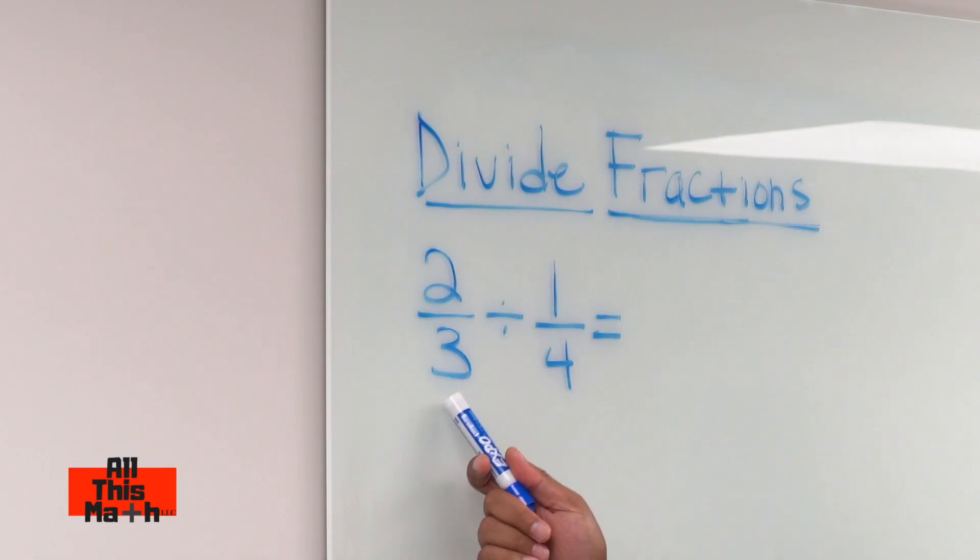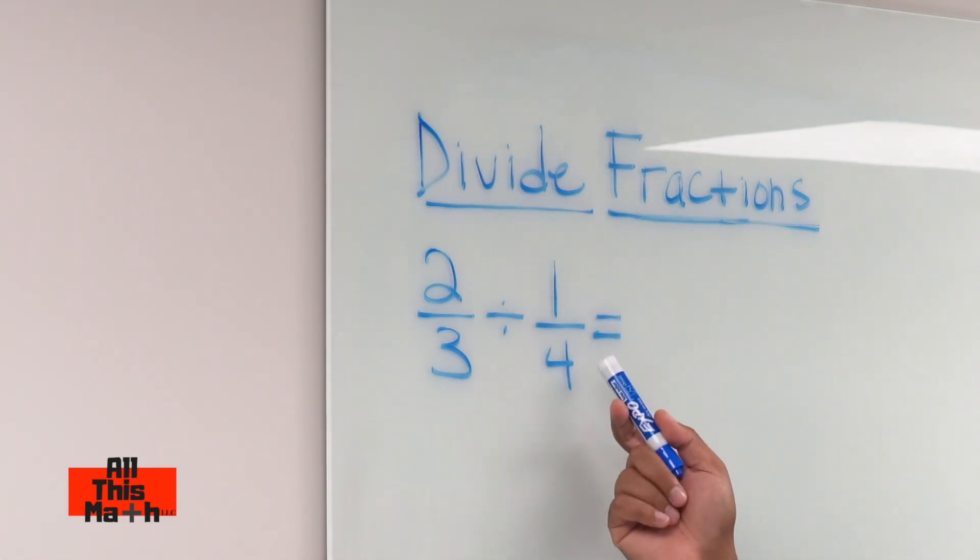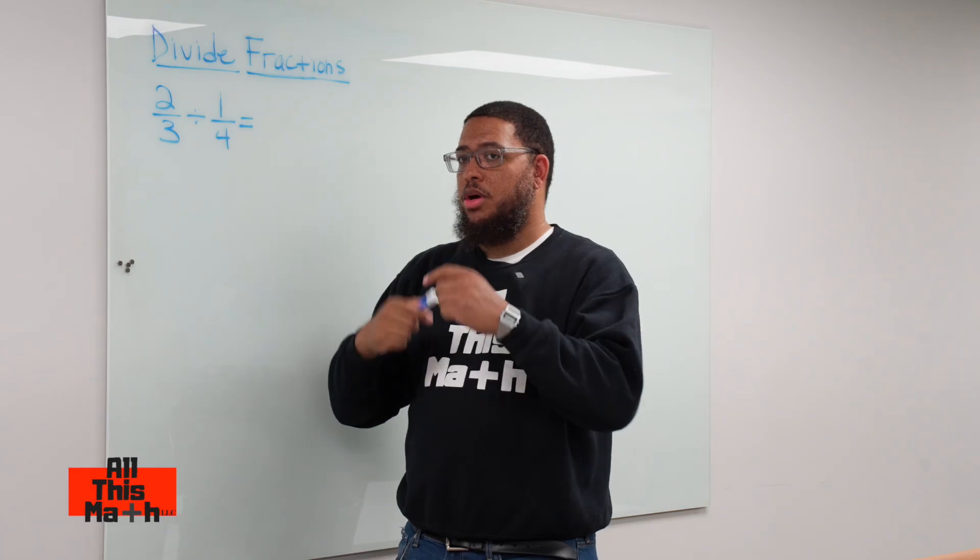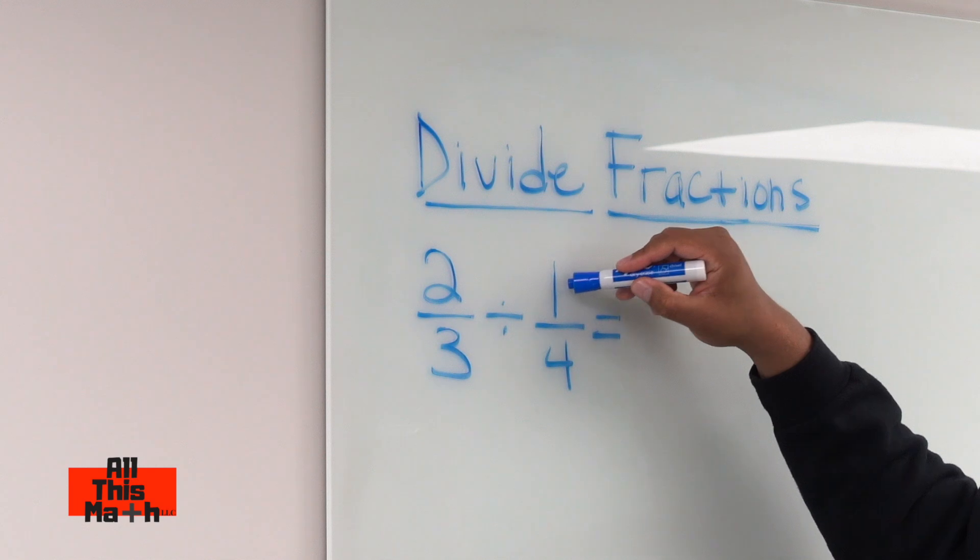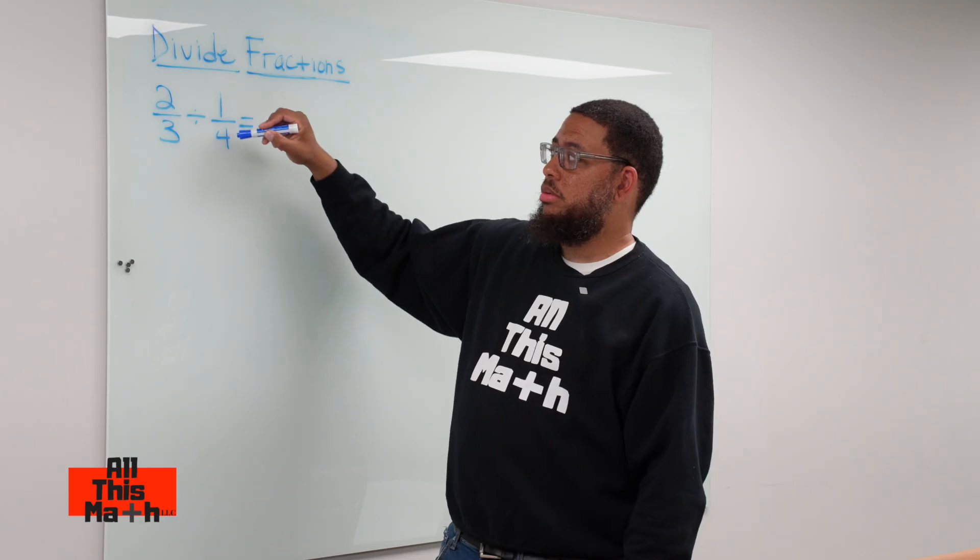What does it mean? It means that you keep the first fraction the same, you change the division sign into a multiplication sign, and then you flip the second fraction, which will be our divisor. One-fourth. We're going to flip it or technically we're going to take the reciprocal of it. The reciprocal is when the numerator and the denominator switch places.